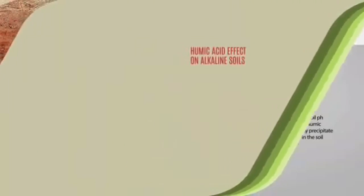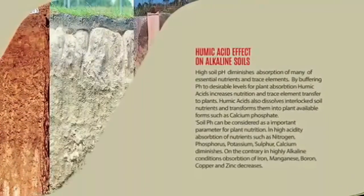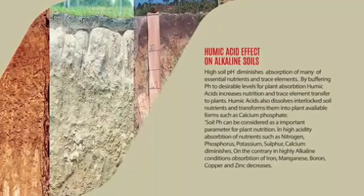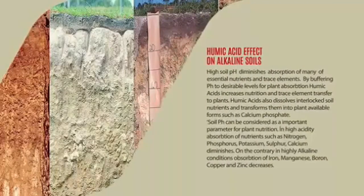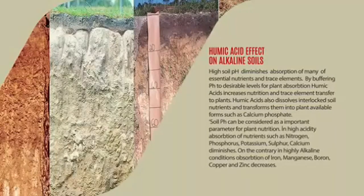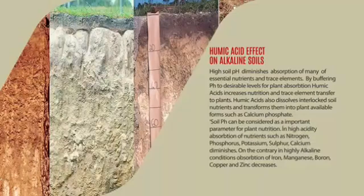A high soil pH diminishes absorption of many essential nutrients and trace elements. By buffering pH to desirable levels for plant absorption, humic acids increase nutrition and trace element transfer to plants. Humic acid also dissolves interlocked soil nutrients and transforms them into plant-available forms such as calcium phosphate.